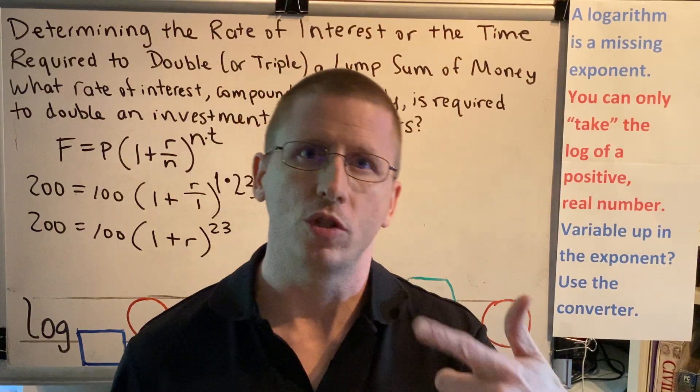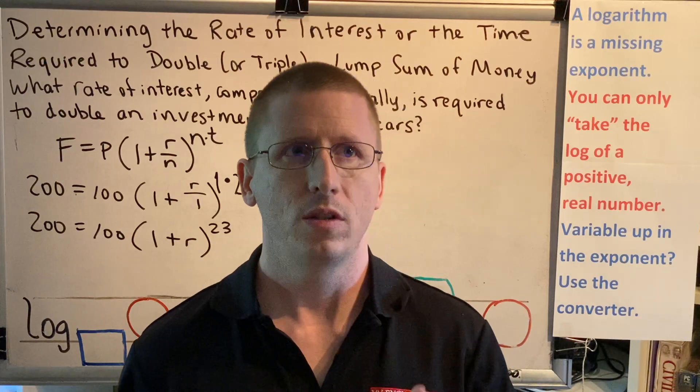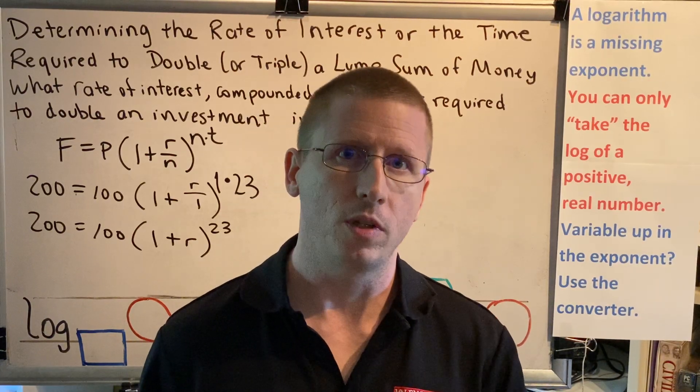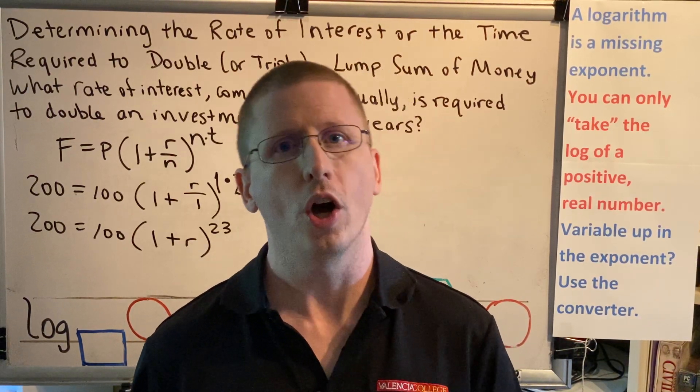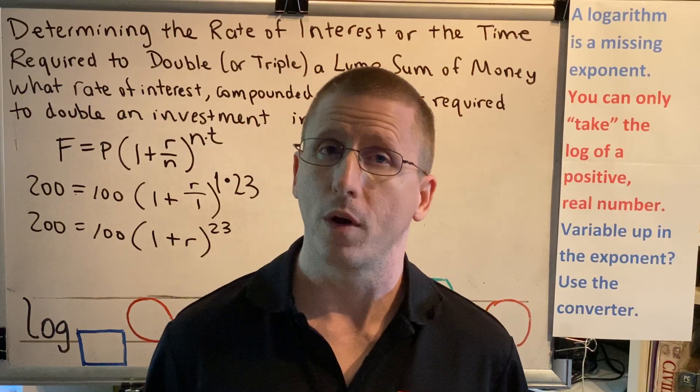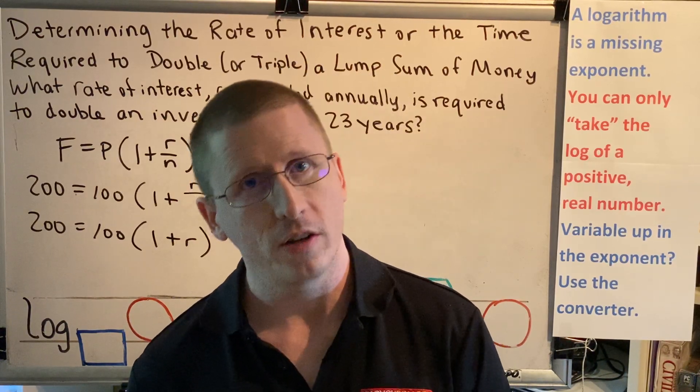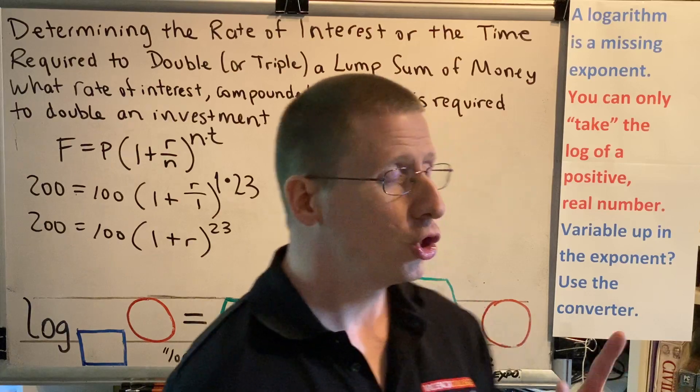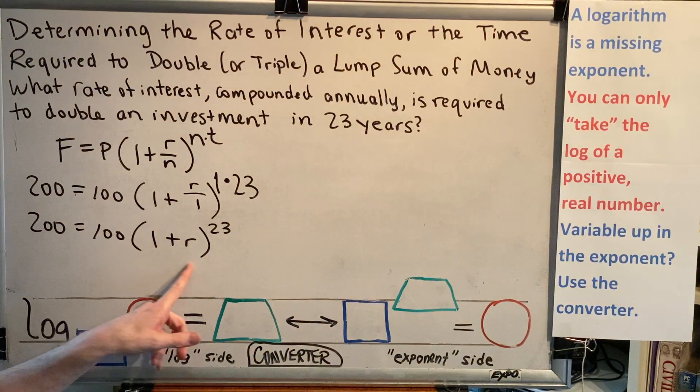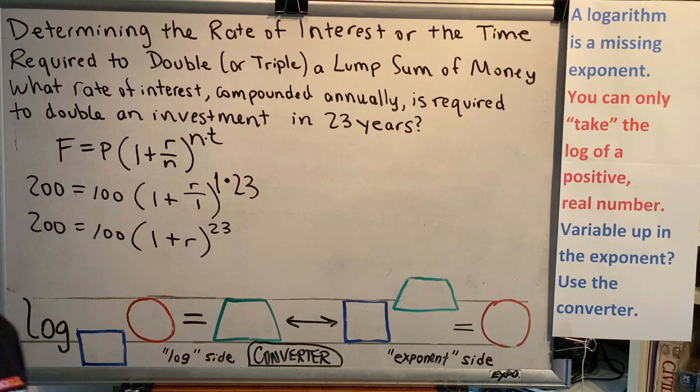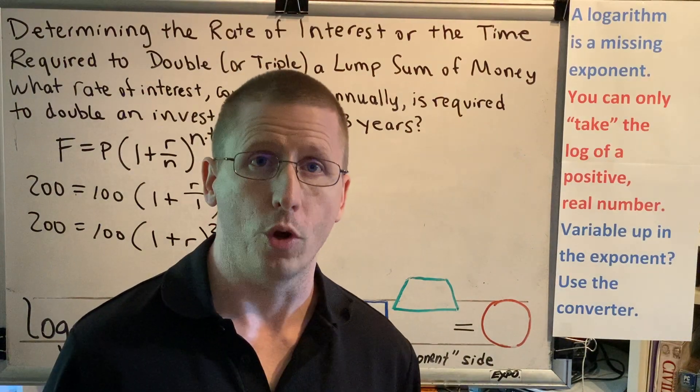Well, you do the opposite of cube, which is cube root. So taking the cube root of R cubed gives you just R. You undo R to the fourth with a fourth root, and you undo R to the fifth with a fifth root. So we are going to undo 1 plus R to the 23rd with a 23rd root.